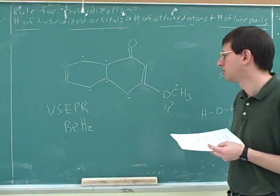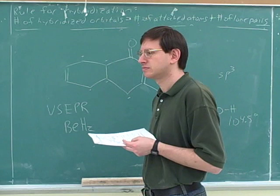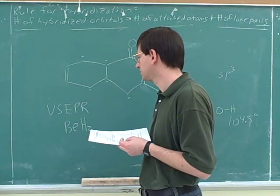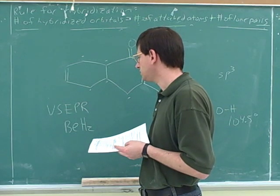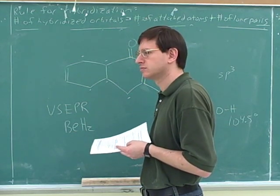Well, Be has two lone pairs and H has a lone pair, so there's a single bond between H-Be-H. So it's linear.